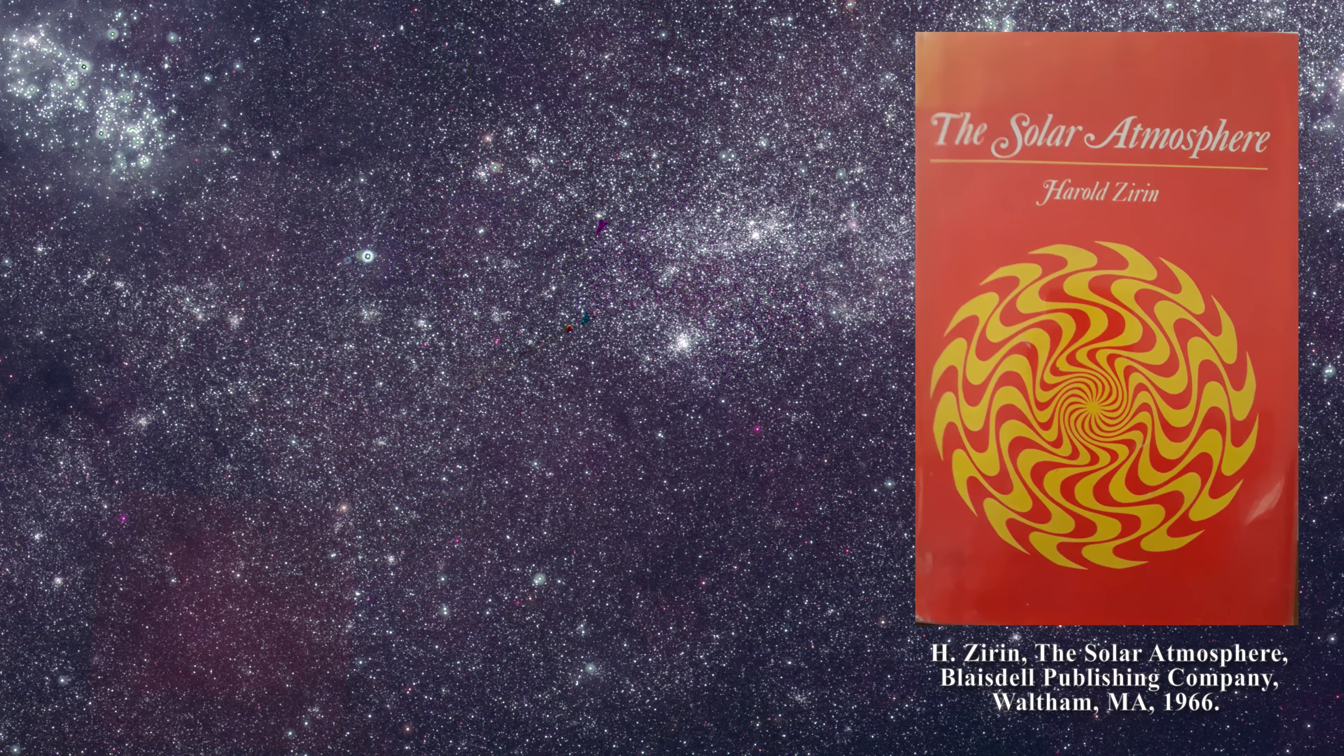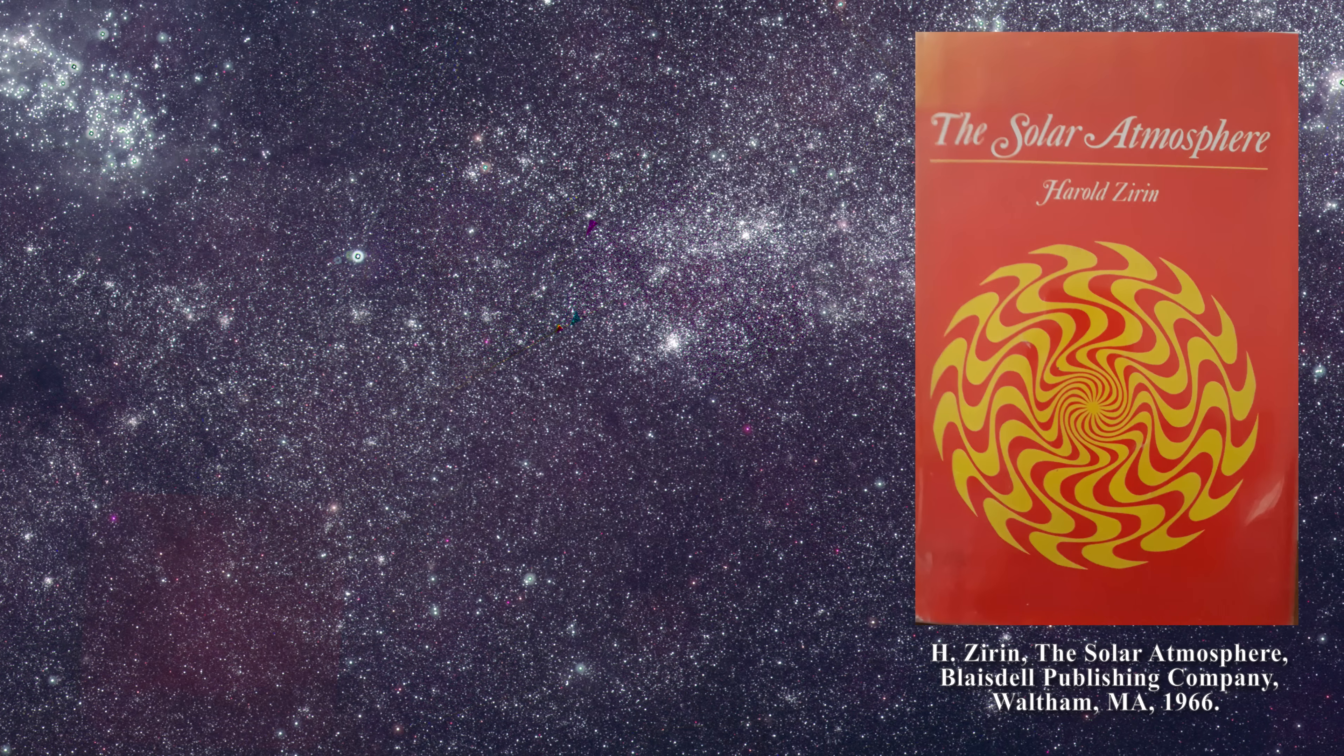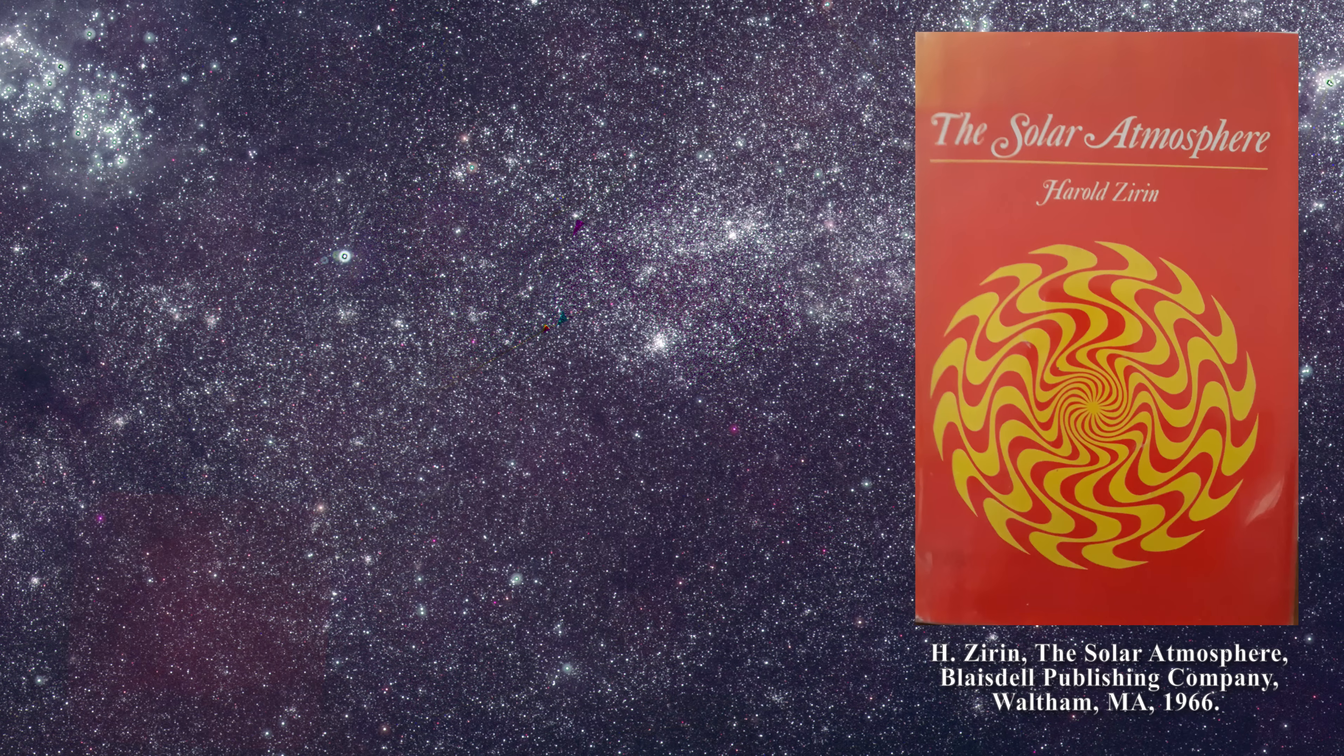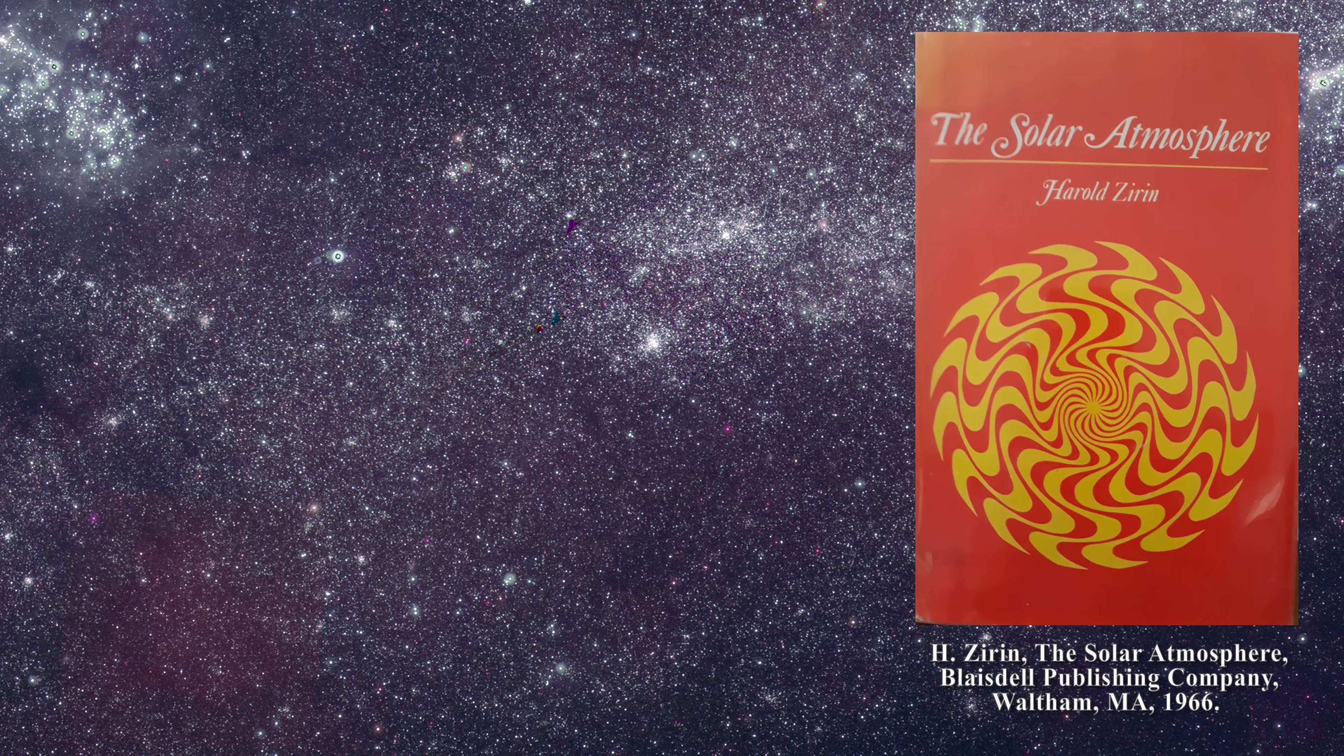Zirin recounts that the Saha equation predicted that there would be much more iron 14 in the corona than iron 13. Yet in reality, the intensities of these lines were nearly identical.